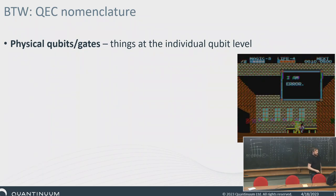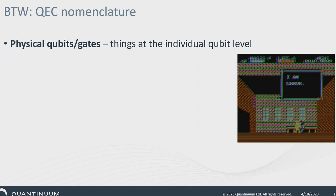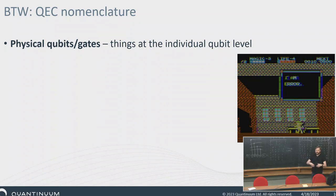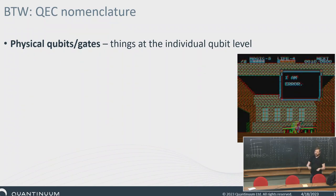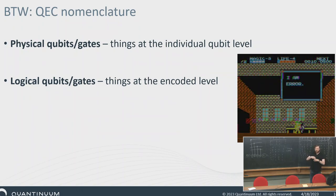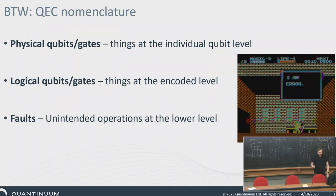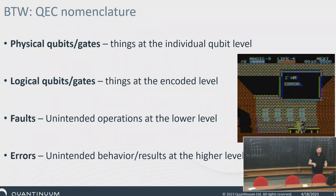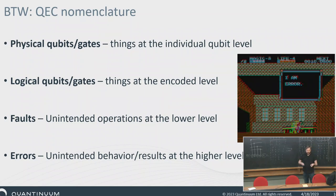Some basic nomenclature. In quantum error correction, we use 'logical' for the encoded system. We call the actual qubits and gates 'physical' — physical gates and physical qubits. Logical qubits and logical gates are what we care about in quantum error correction. Technically, faults are about the lower abstraction level, while errors are what the user sees on the logical level. Those words are often used interchangeably in the QEC community, but a fault can cause an error without necessarily doing so — it could be a benign fault.